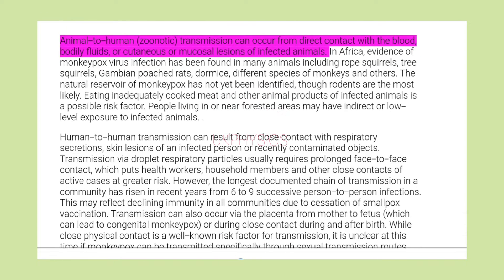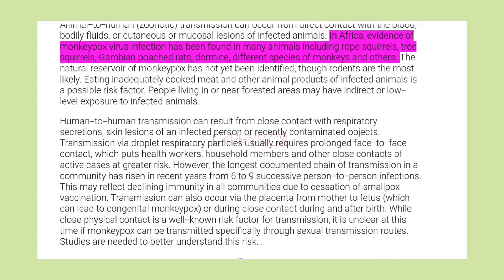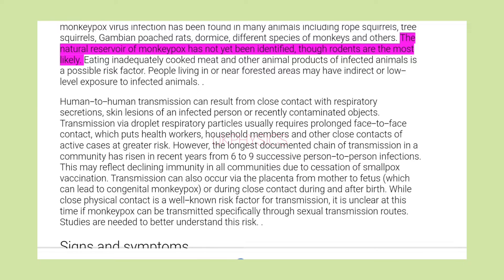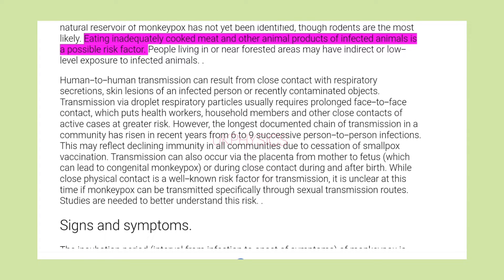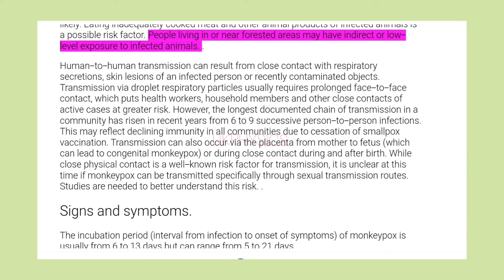Transmission: Animal-to-human transmission can occur from direct contact with the blood, bodily fluids, or cutaneous or mucosal lesions of infected animals. In Africa, evidence of monkeypox virus infection has been found in many animals including rope squirrels, tree squirrels, Gambian pouched rats, dormice, and different species of monkeys. The natural reservoir of monkeypox has not yet been identified, though rodents are most likely. Eating inadequately cooked meat and other animal products of infected animals is a possible risk factor. People living near forested areas may have indirect or low-level exposure to infected animals.